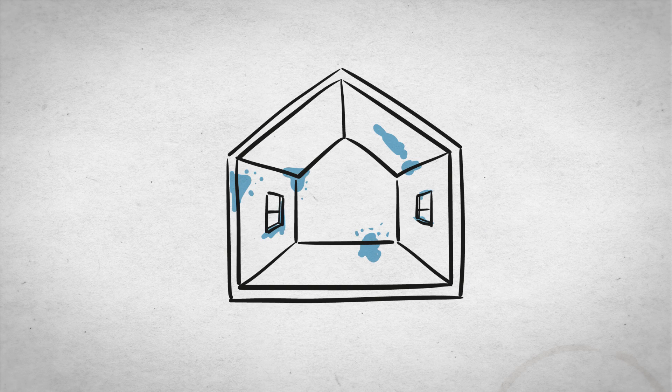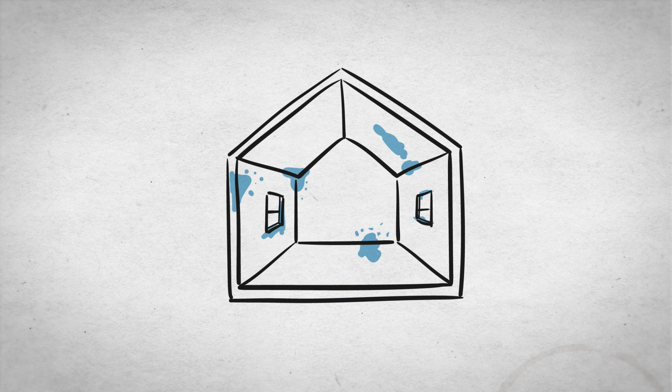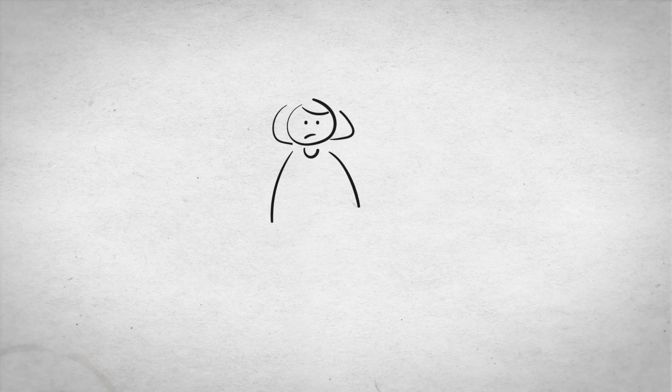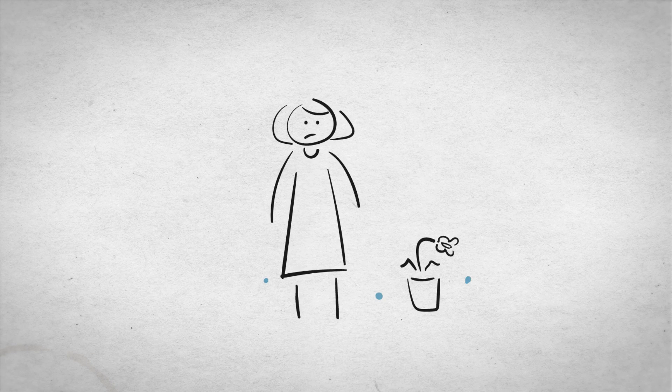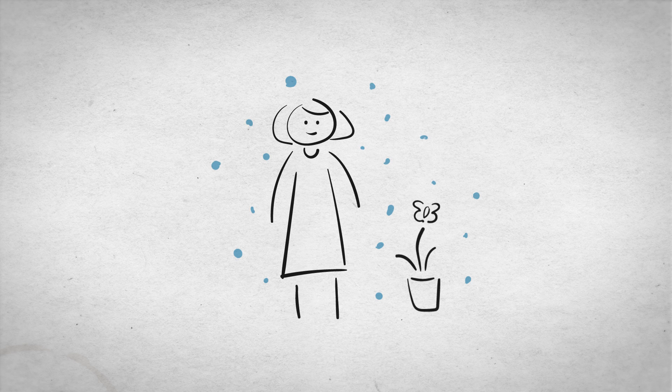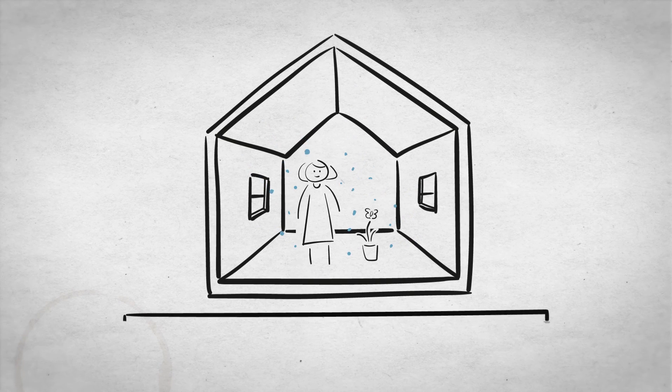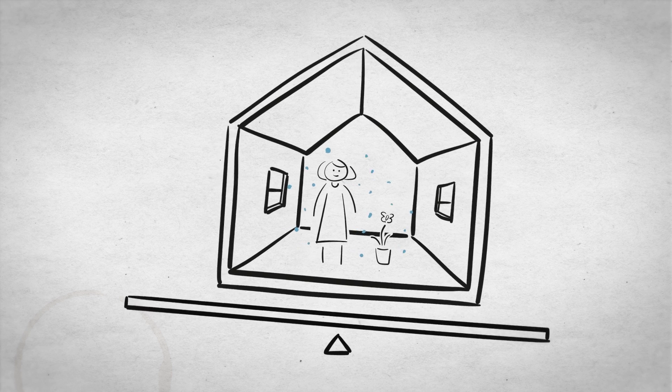Damp and mould are caused by an excess of moisture and can create problems for our health and for our buildings. However, just like our bodies, we need some moisture in our houses in order for them to function well. So we need a balanced amount of moisture to keep a healthy home.